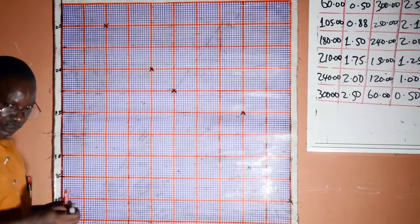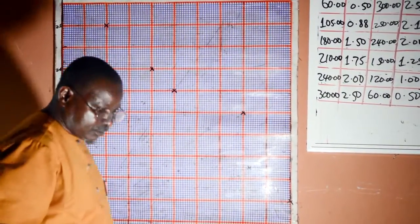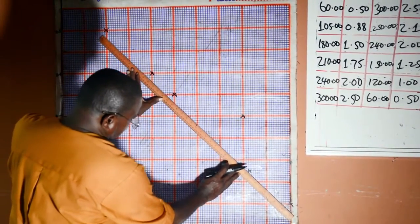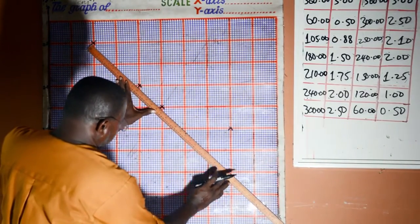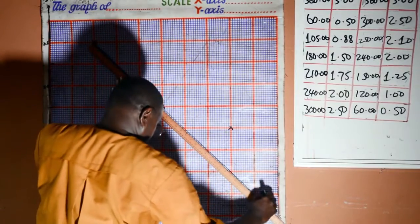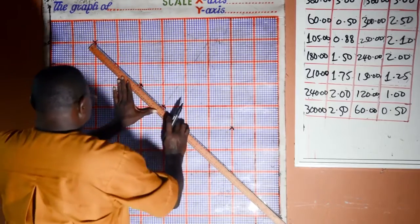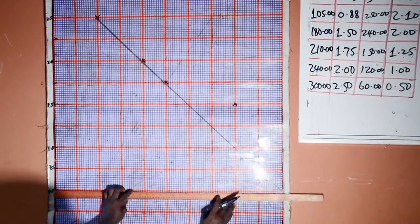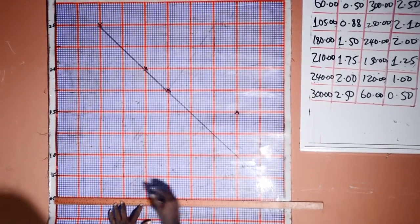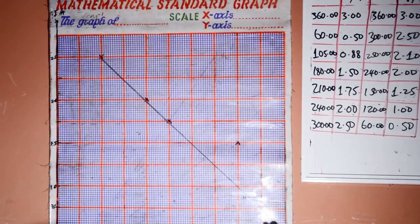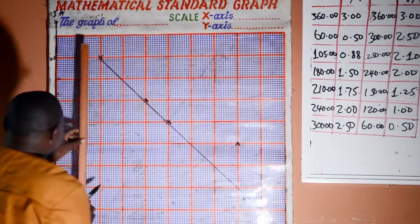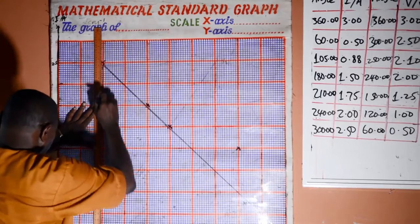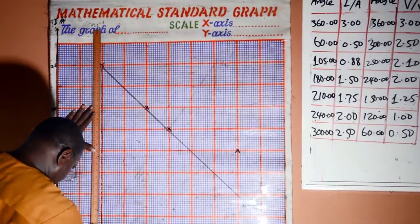So now we are going to join them together. This is the bottom of the graph. Now I want to calculate this slope. Then we draw a horizontal line, then vertical line. This is the right angle triangle here.